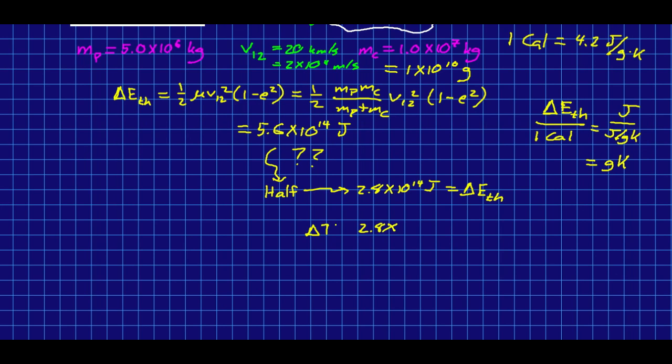All right, so all I have to do is take this 2.8. So this is our delta T is going to be 2.8 times 10 to the 14 joules all divided by the 4.2 joules per gram kelvin. And then I have to further divide that by my inertia, the 1 times 10 to the 10 grams. And if you just look at that, this is still going to be really big, right? Because we've got 10 to the 14 divided by 10 to the 10, that's still 10 to the 4 divided by a little bit of change. It ends up coming out as about 6.7 times 10 to the 3 kelvin.